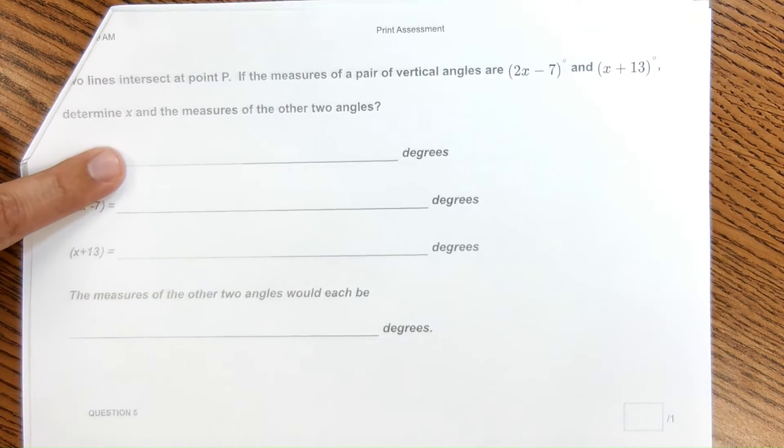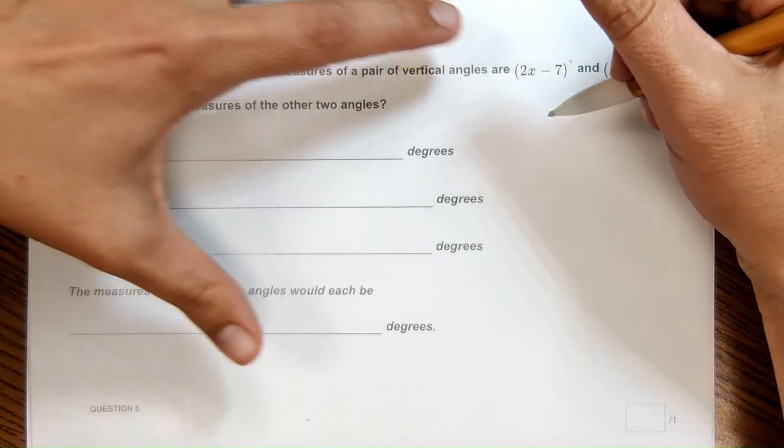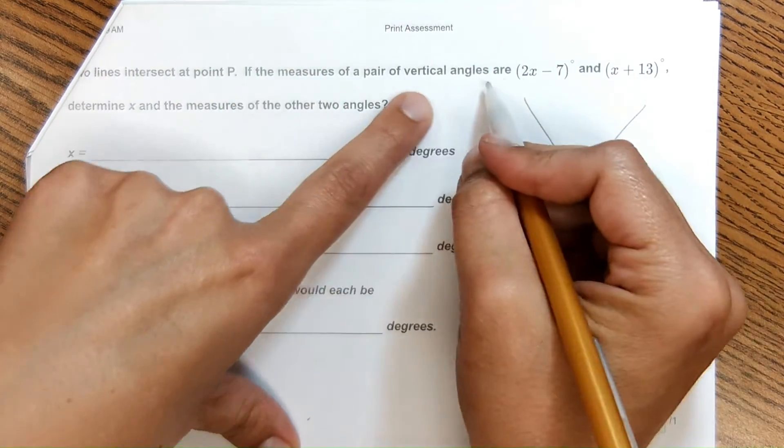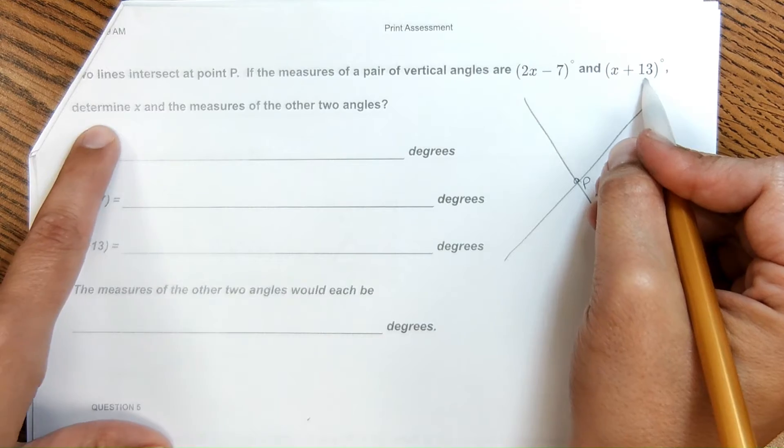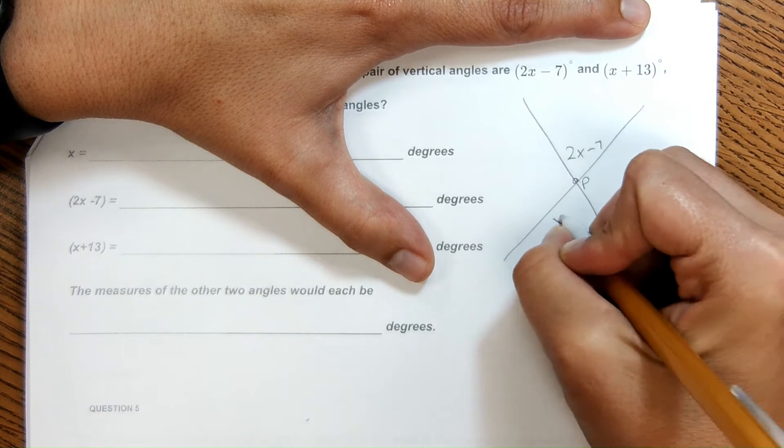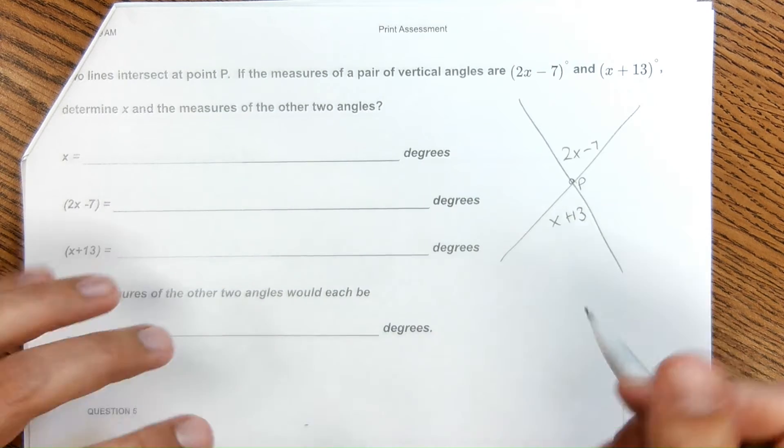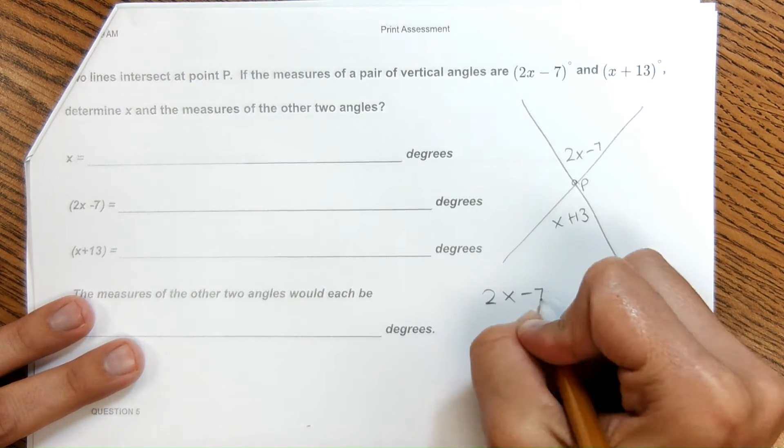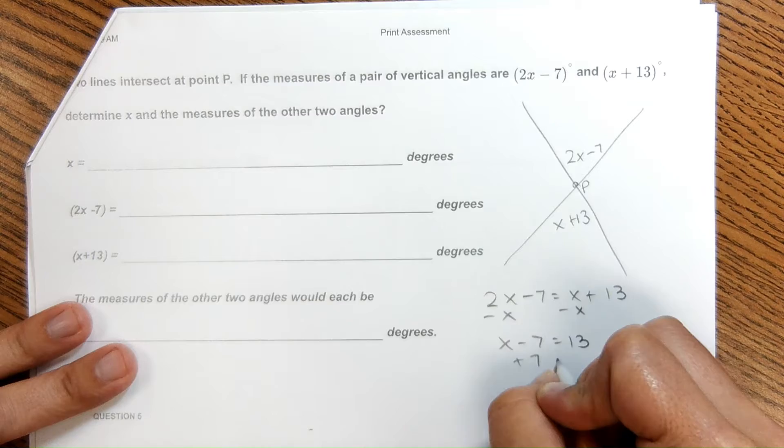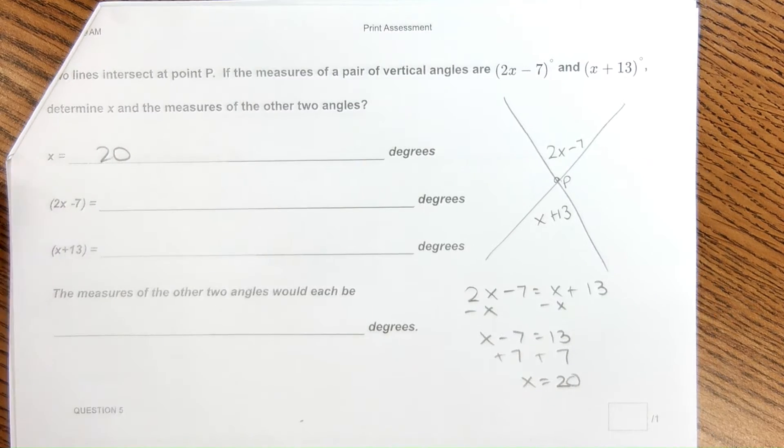Here is another situation where we're going to have to sketch it out to see what's going on. It says two lines intersect at point P. So I'm going to have two lines that intersect at point P. If the measure of a pair of vertical angles are here, determine X and the measure of the other two angles. So these are vertical angles. First step is to find X. I'm going to find X by setting these equal to solve for X since vertical angles are equal. X equals 20. So I can plug that in here.